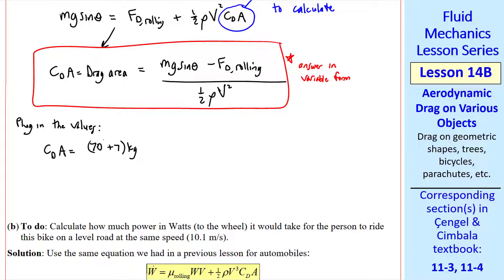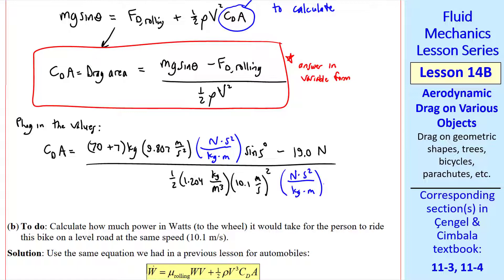We plug in the values - the total mass, rider plus bicycle, g, a unity conversion factor to get this term into newtons, times sine five degrees, minus the rolling resistance, divided by one half rho times the terminal speed squared, and we need the same unity conversion factor. We get 0.762 square meters. And this is our answer for part A.